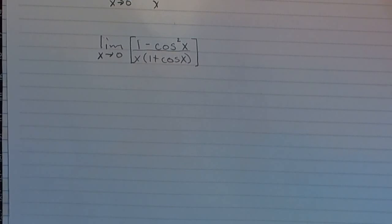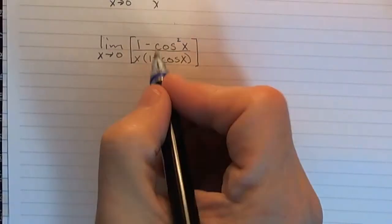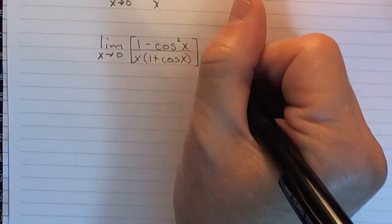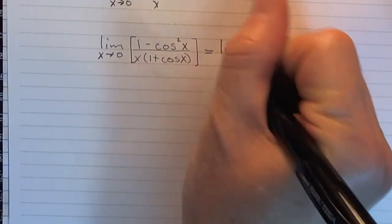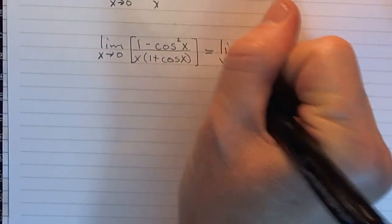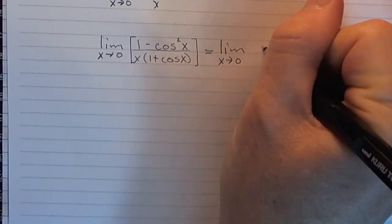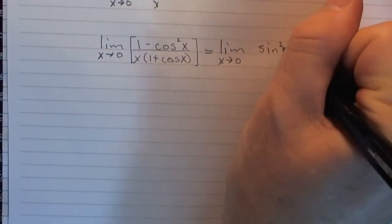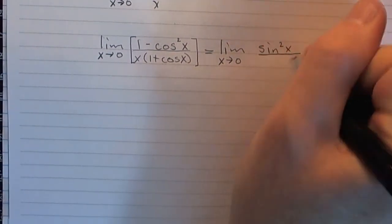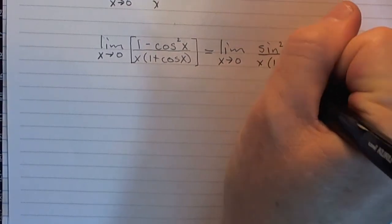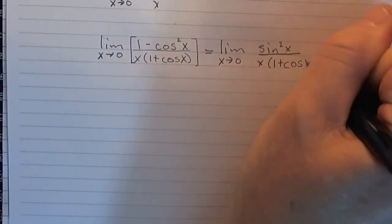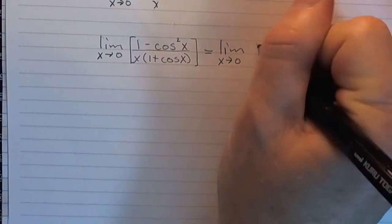Okay. Well, 1 minus cosine squared x is sine squared x. So let me write that as sine squared x over x times 1 plus cosine x. Yeah. There we go.